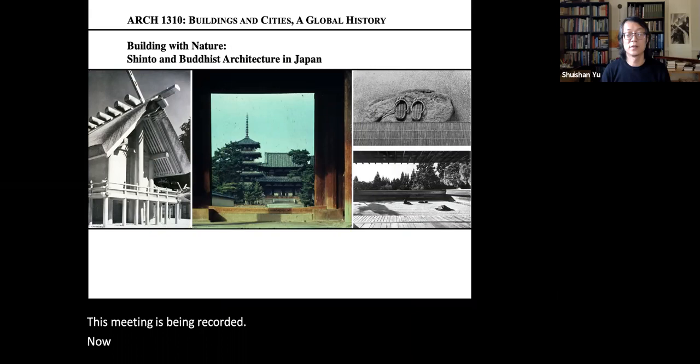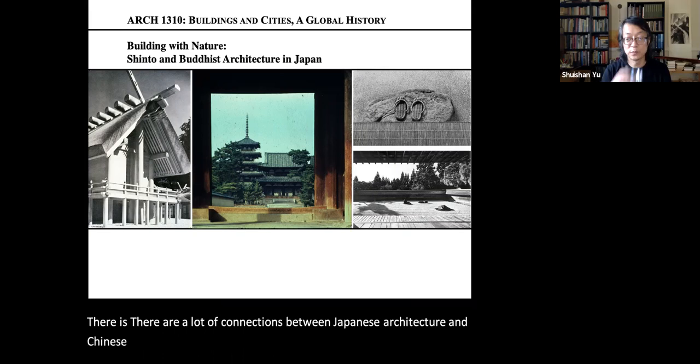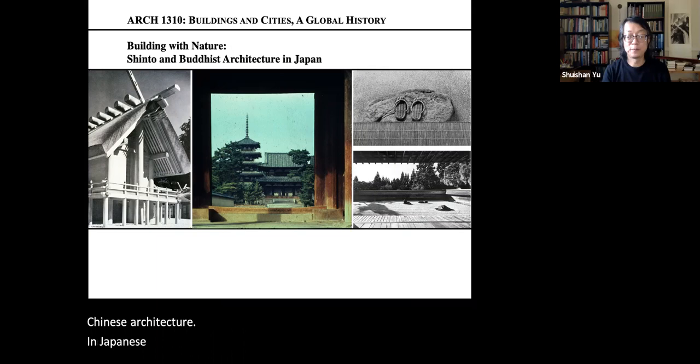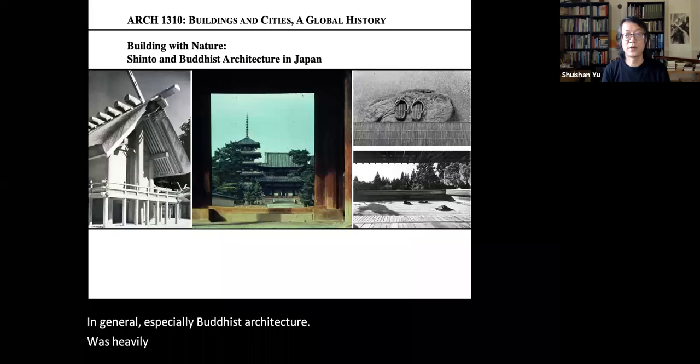Now let's start looking at Japanese architecture. There are a lot of connections between Japanese architecture and Chinese architecture, and Japanese architecture in general, especially Buddhist architecture, was heavily influenced by Chinese architecture.